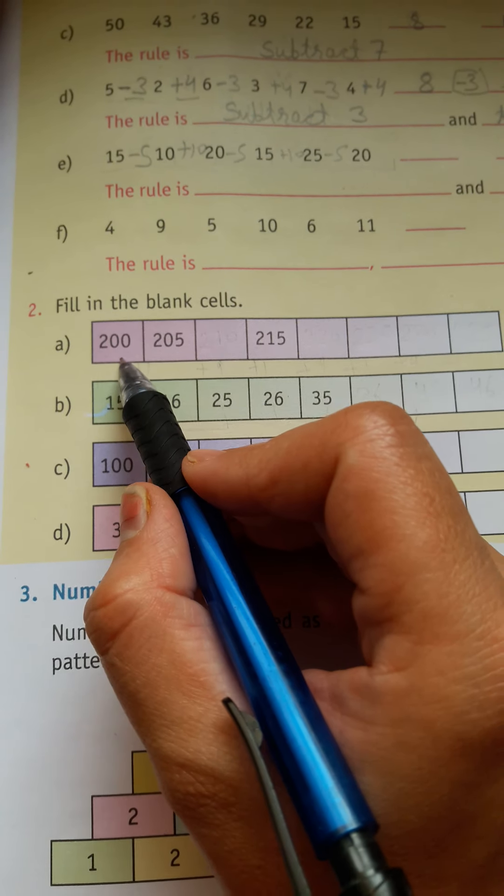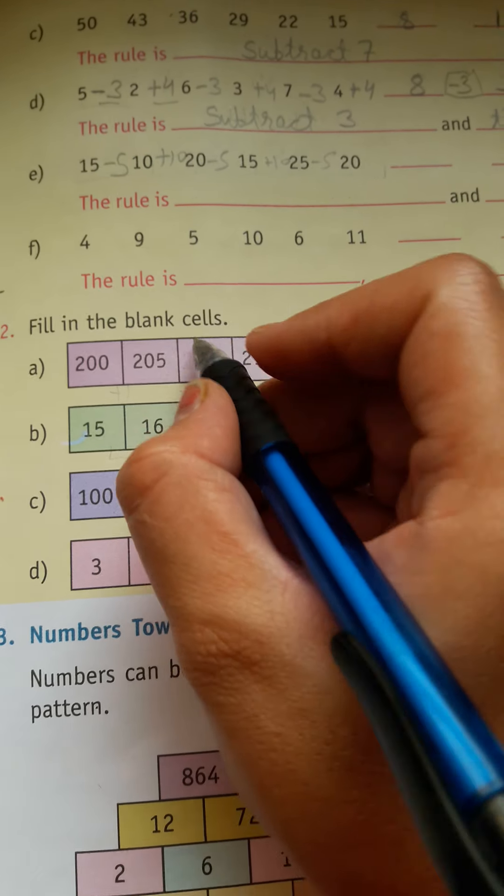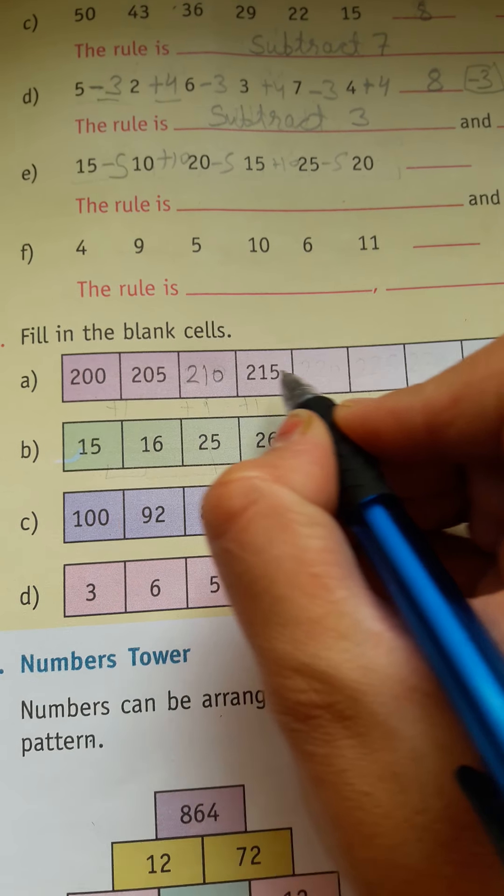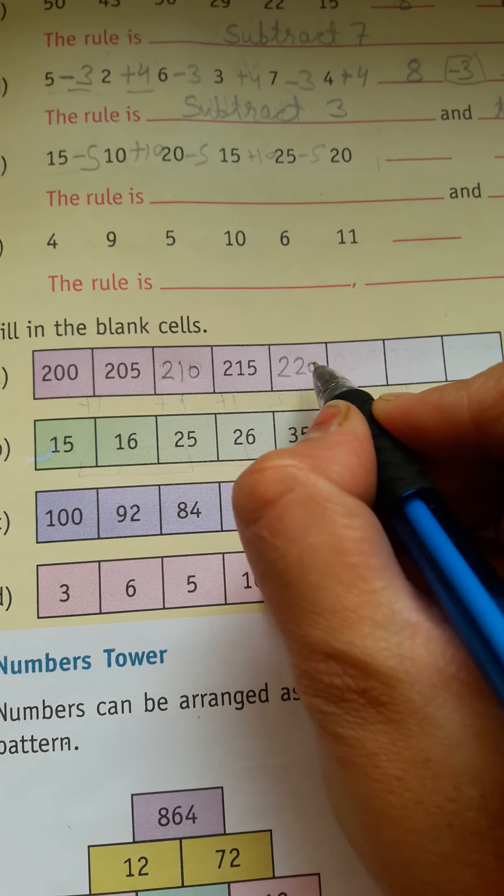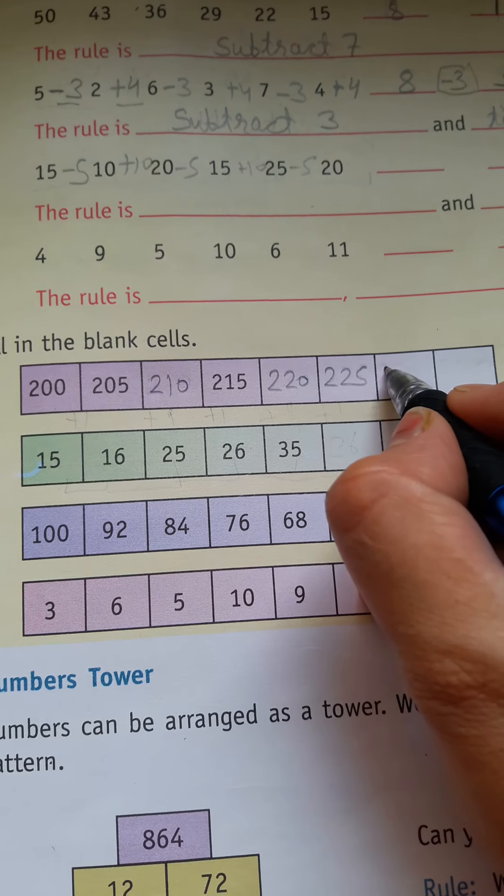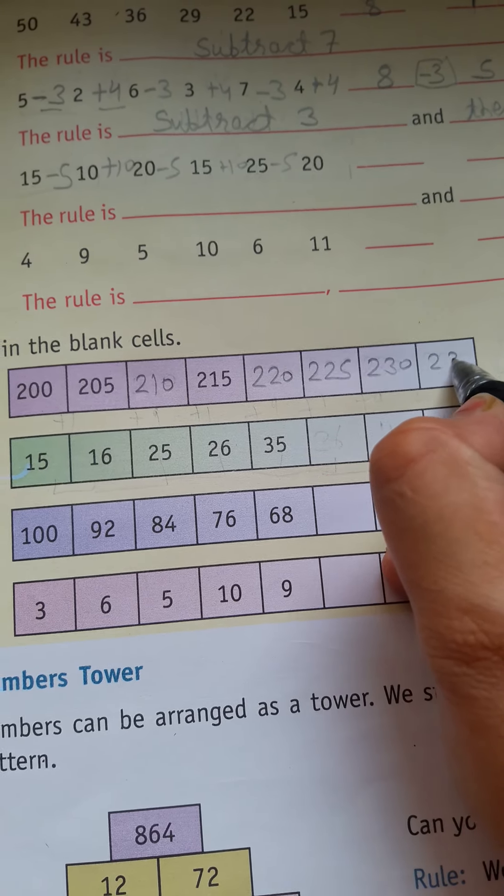Second is fill in the blank cells: 200, 205, 210, 215, 220, 225, 230, 235.